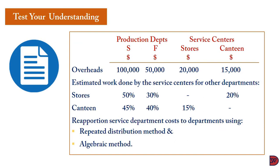For this example, production departments are S (sewing) and F (finishing), with two service departments: stores and canteen. Apportioned overheads are: sewing $100,000, finishing $50,000, stores $20,000, canteen $15,000. The stores cost was influenced by sewing 50%, finishing 30%, canteen 20%. The canteen cost was influenced by sewing 45%, finishing 40%, stores 15%.